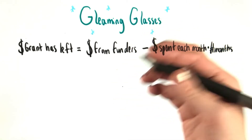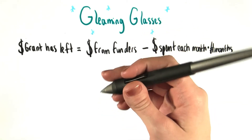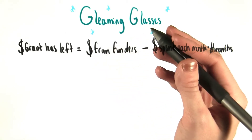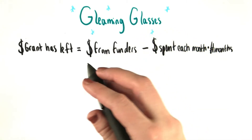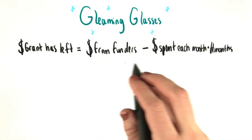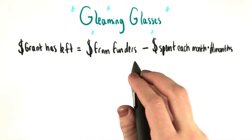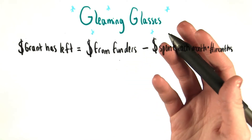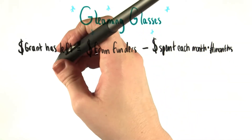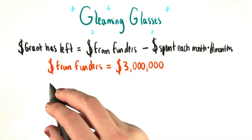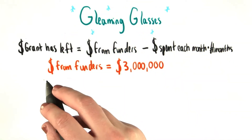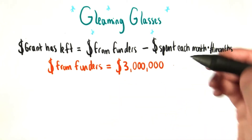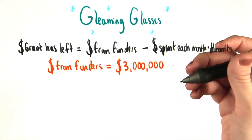Well, we learned from our story that Grant earned $3 million in venture capital funding. So that means that money from funders right here is equal to $3 million.